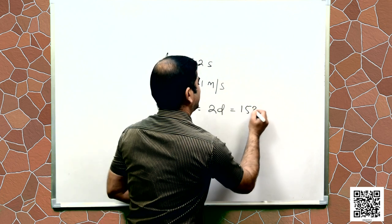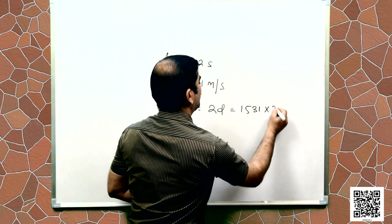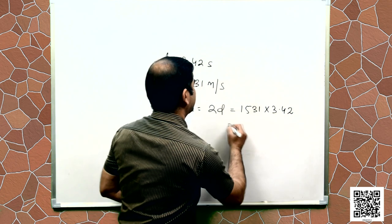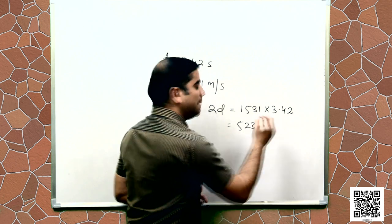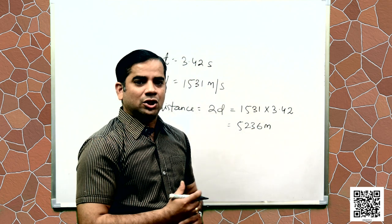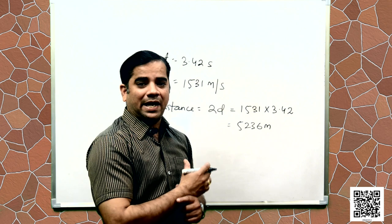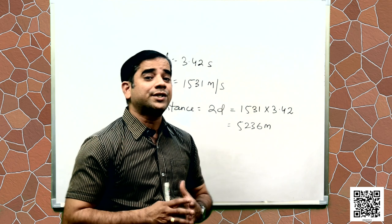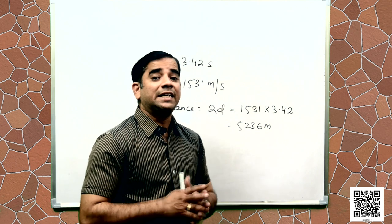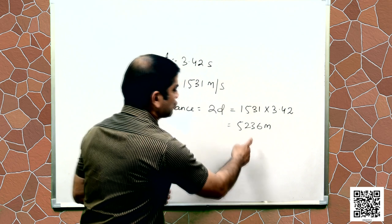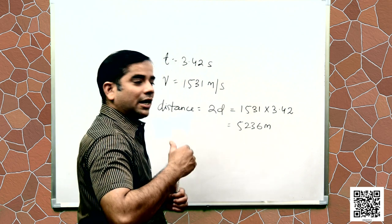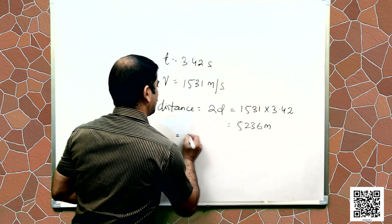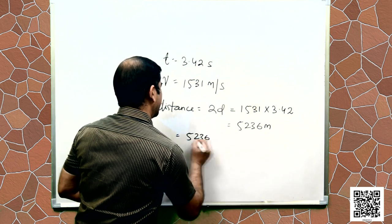So 1531 into 3.42. So it gives us 5236 meter. The total distance travelled by the sound is 5236 meter. So the question asked about the distance of seabed from the ship. So this is the total distance.